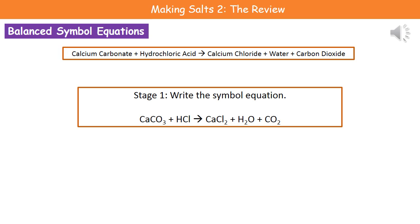Our formula for calcium carbonate is CaCO₃ plus hydrochloric acid HCl, giving an arrow to show we're going to our products: calcium chloride CaCl₂ plus water H₂O plus carbon dioxide CO₂.